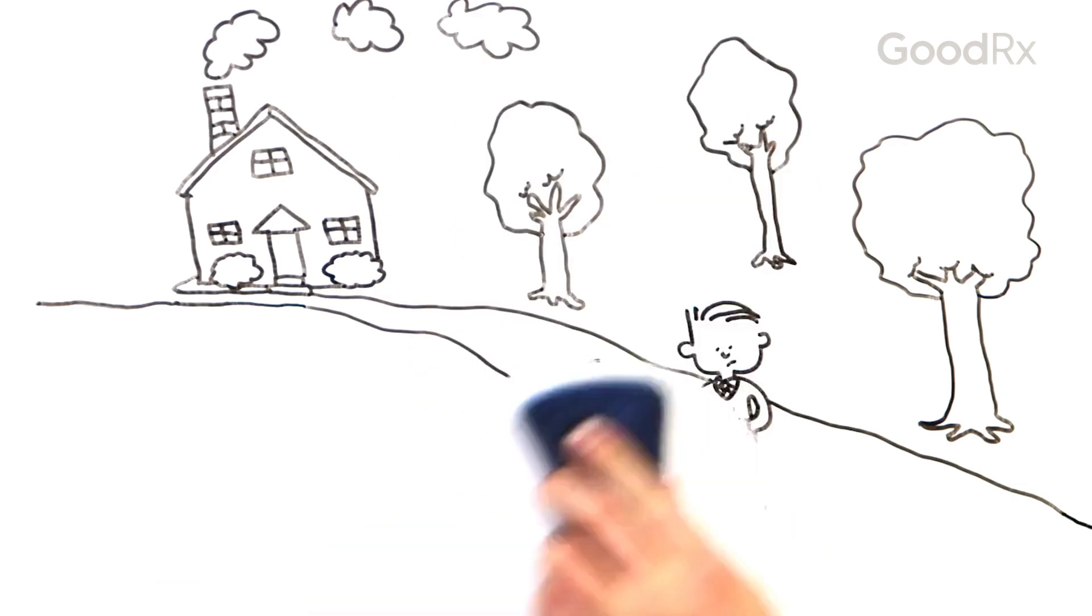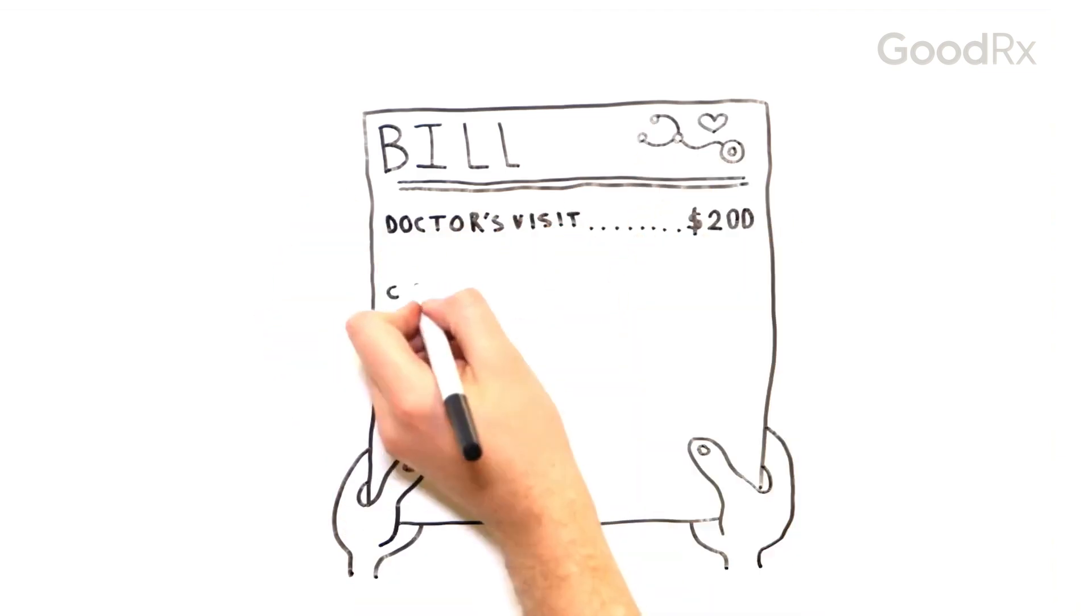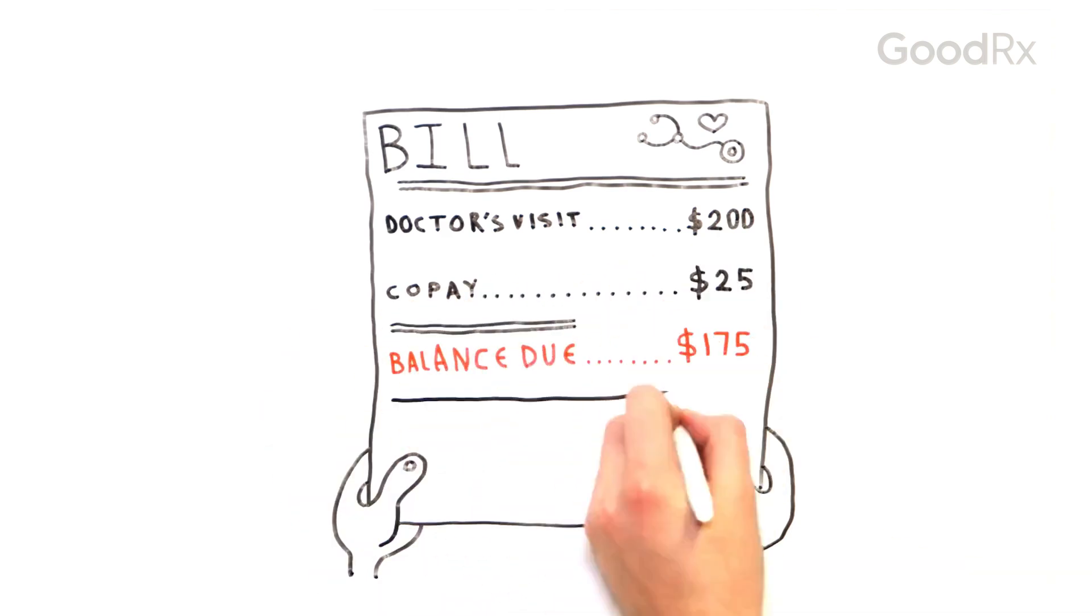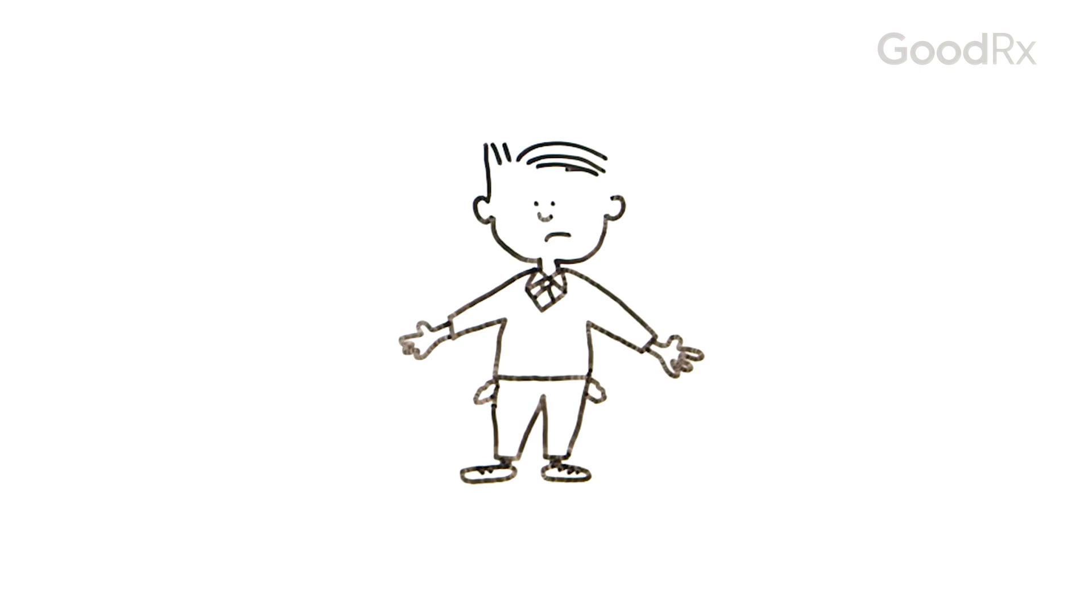Here's why. Jim's doctor charges $200 for the office visit and tests, minus the co-pay Jim paid at the office. Although Jim has insurance, he has to pay this bill out of his pocket. Why?